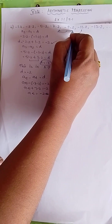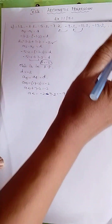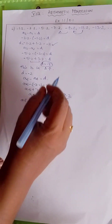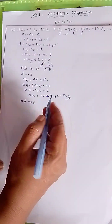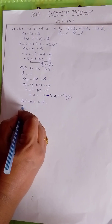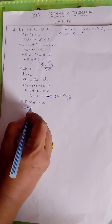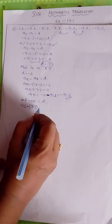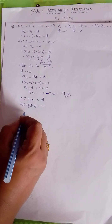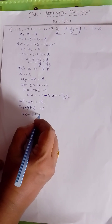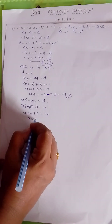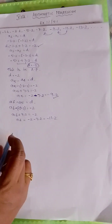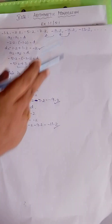Next we need to find -11.2. So A6 minus A5 = D. A6 minus (-9.2) = -2, so A6 + 9.2 = -2, therefore A6 = -2 minus 9.2 = -11.2. This is how we find the next terms.